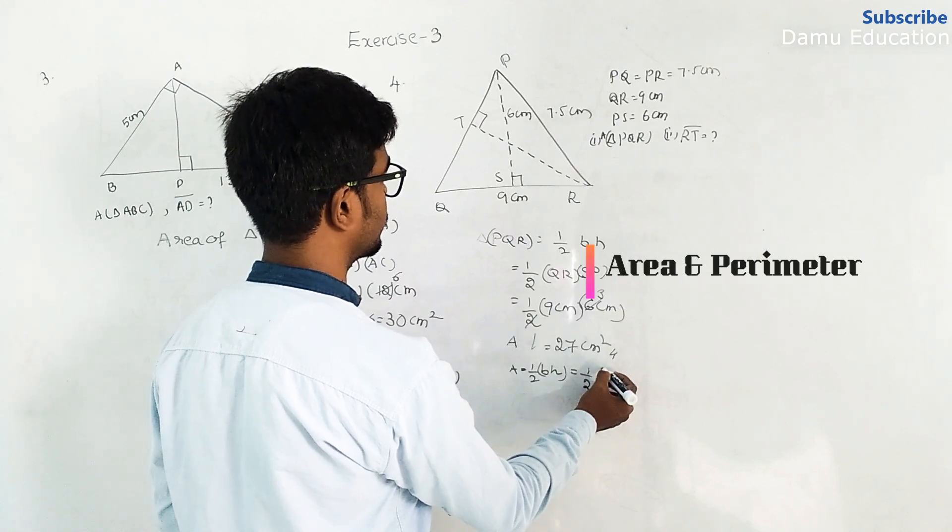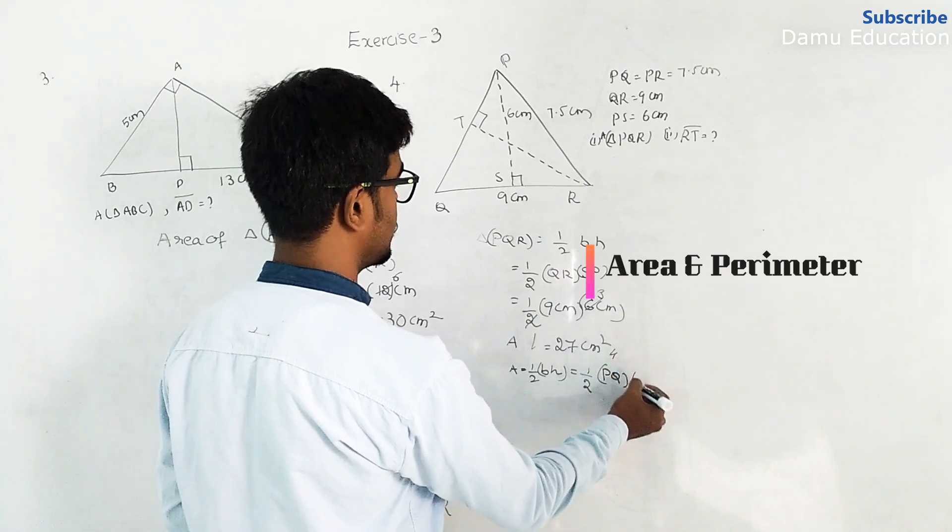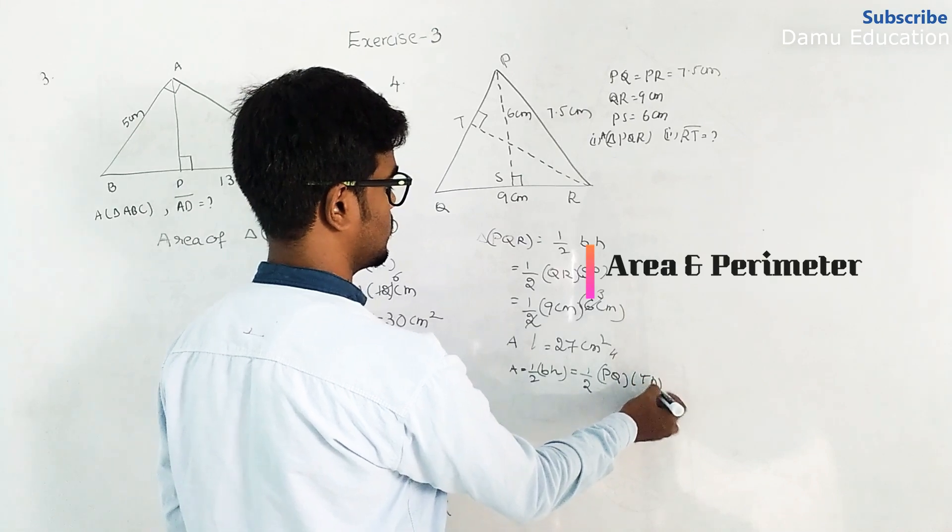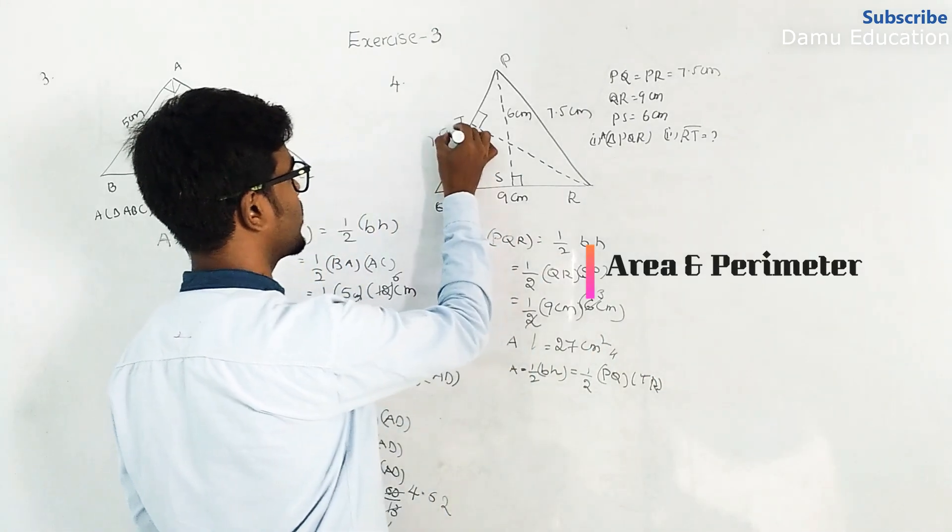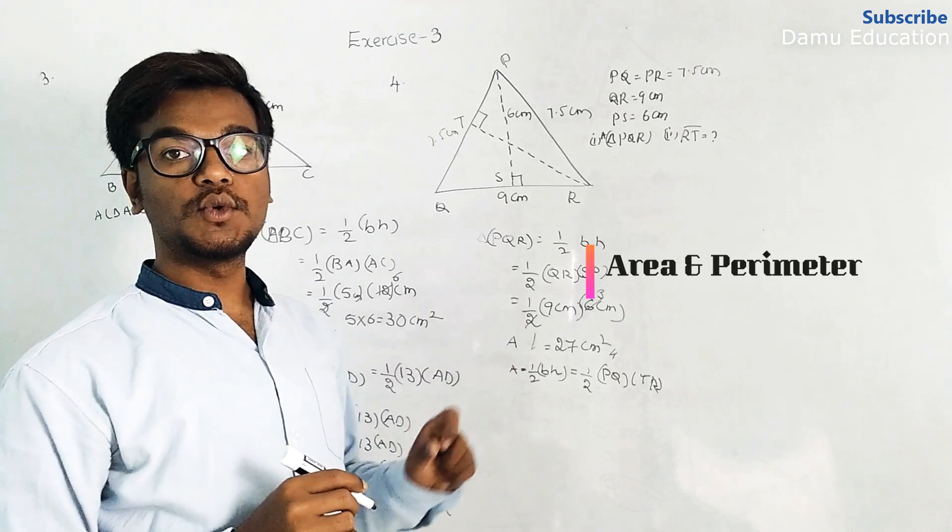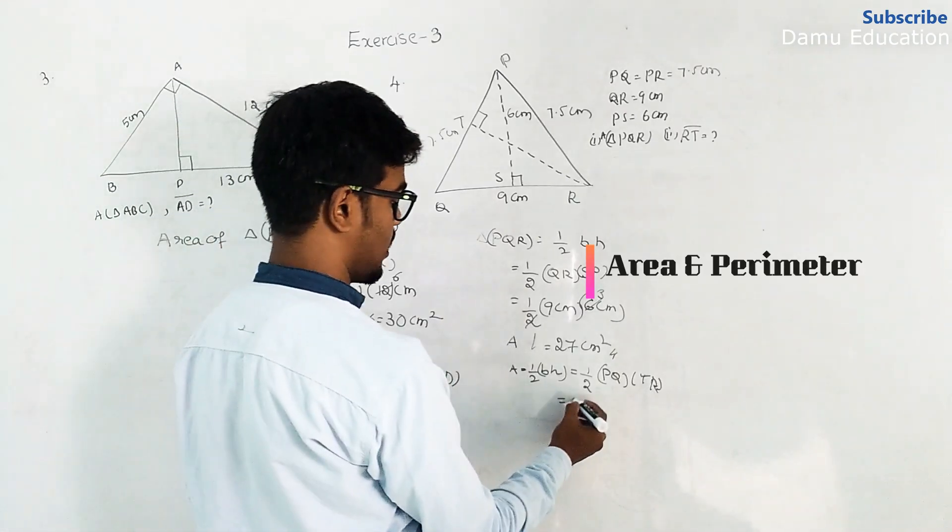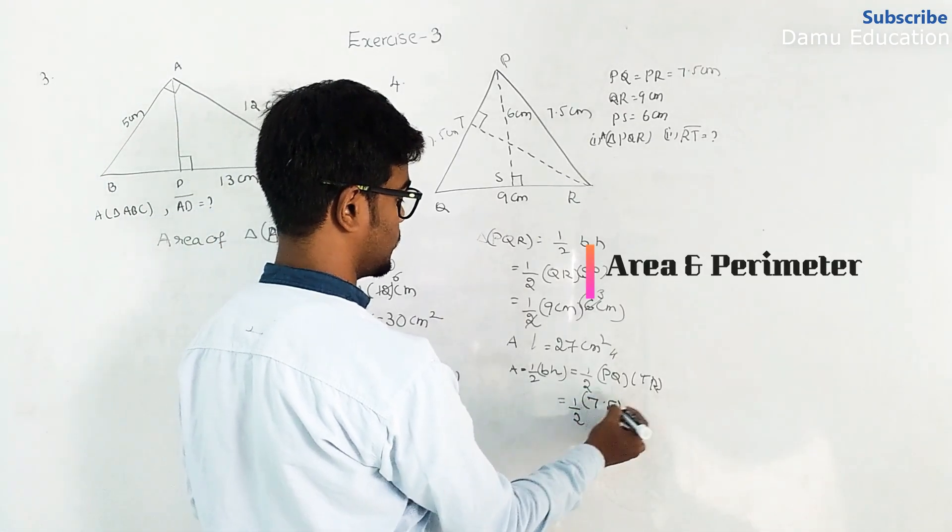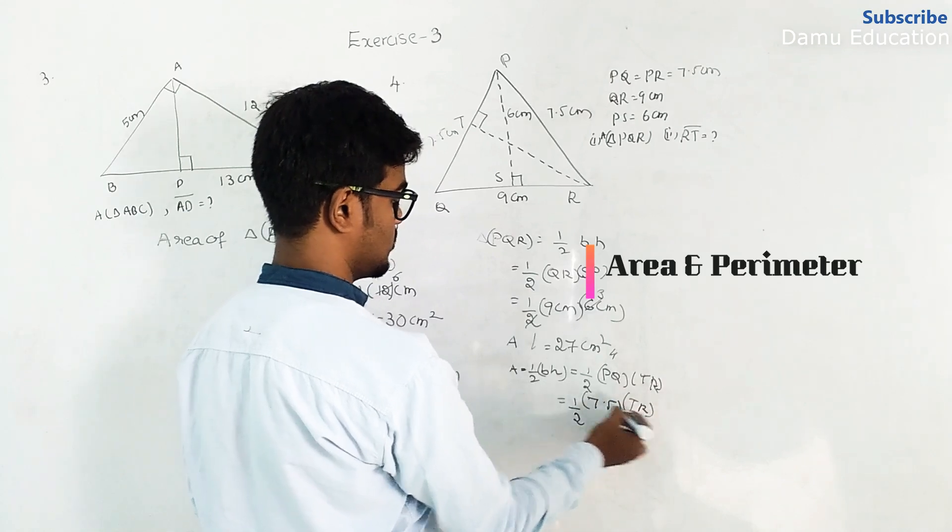Isosceles means PQ is also 7.5 cm. So half into 7.5 into TR.